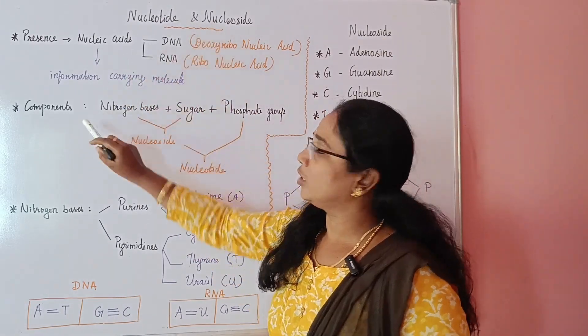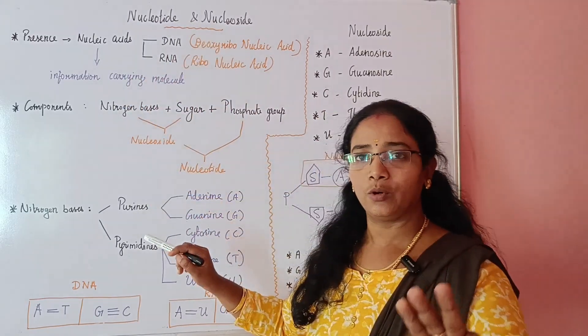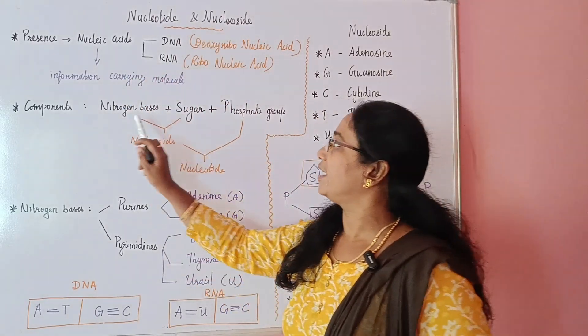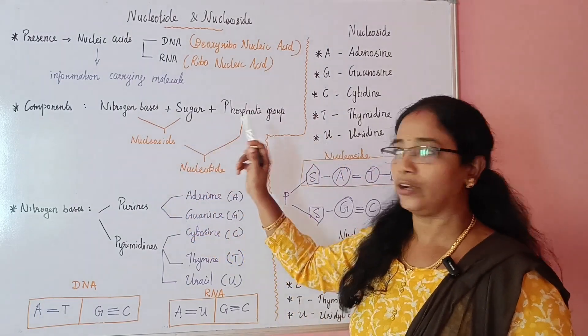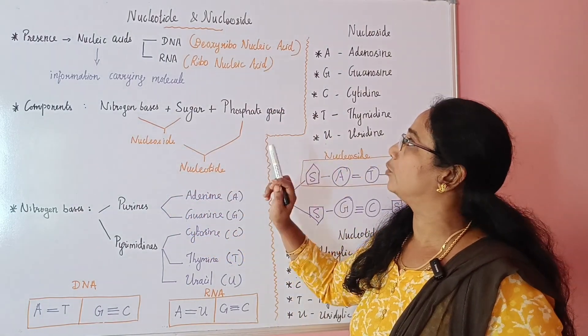These components are total 3: nitrogen bases, sugar, and phosphate group.